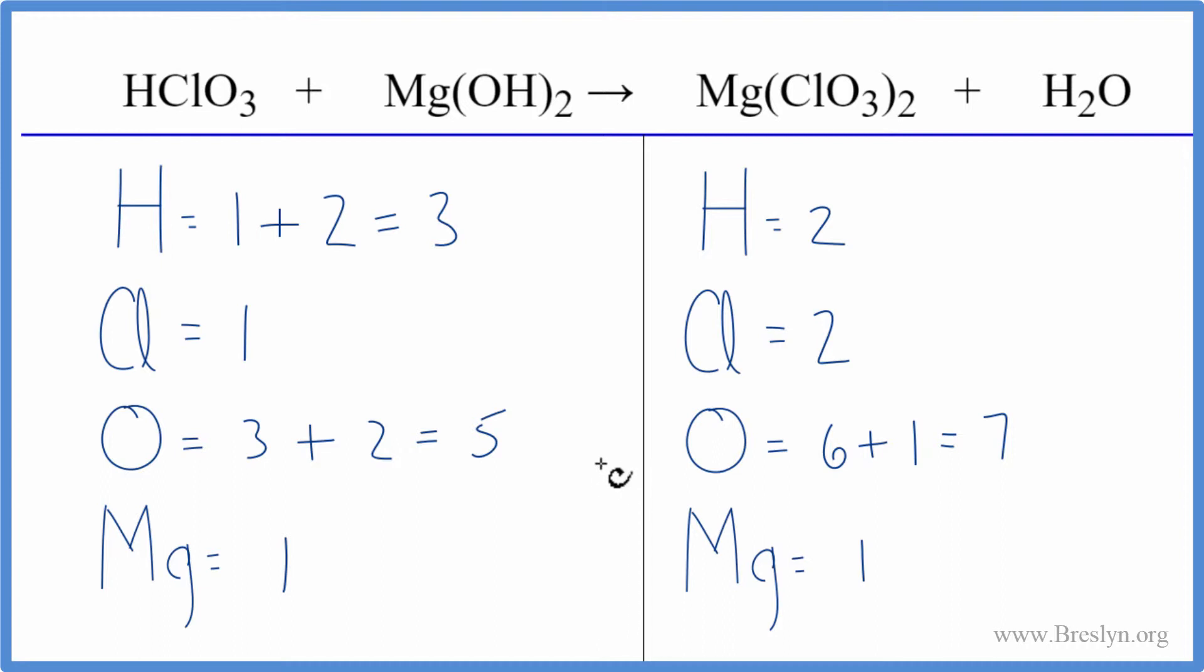So we got that. The rest should be pretty straightforward. I like to leave the hydrogens and oxygens till last when I'm balancing, so I'm going to balance the chlorine atoms first. I'll put a two in front of the HClO3. Now it looks like I need to update all this though.